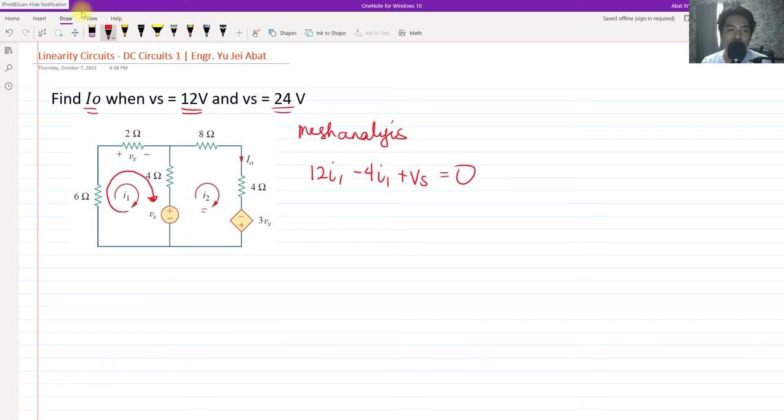The summation of the voltages around the closed loop should be 0. So we also have for mesh 2, in the perspective of I sub 2, 4 ohms is shared. This would be 4 I sub 2. In this one, 4 ohms is shared, this would be negative 4 I sub 1.